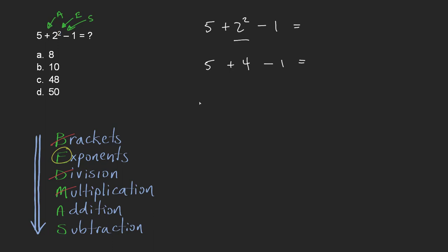So 5 plus 4, I'll do that first. 5 plus 4 is 9. So now it's 9 minus 1. And then 9 minus 1 equals 8. So that takes care of my exponents and my addition and my subtraction. And so the answer here is 8.